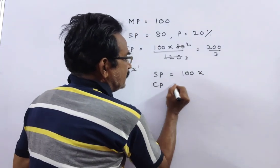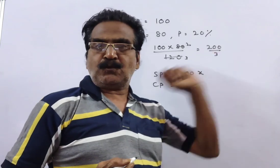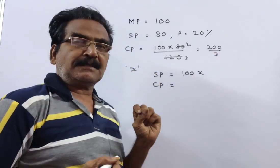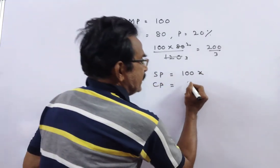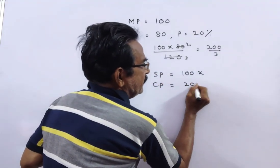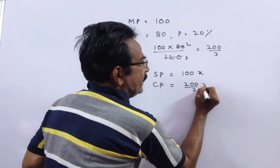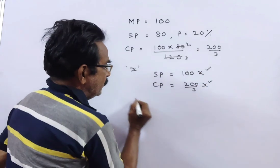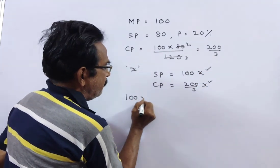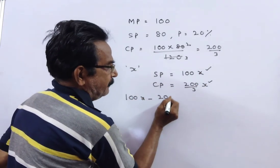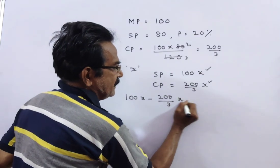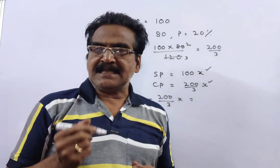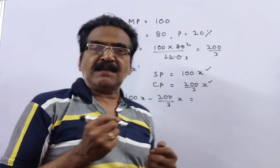What is the cost price of X articles? The cost price of each article is 200/3. So the cost price of X articles is X × 200/3, which equals 200X/3. Now, selling price minus cost price equals profit: 100X − 200X/3 = 100X/3.